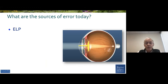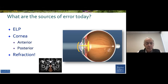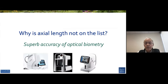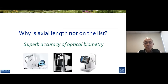So what are the sources of error today? ELP still is there, and now the cornea has really assumed a very important role, both anterior and posterior, and again refraction. Axial length is not on the list because we have optical biometry, which has gone from PCI to optical low coherence, and now into swept source OCT with fabulous accuracy.